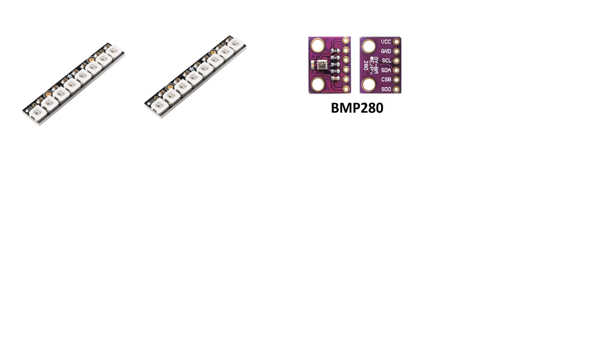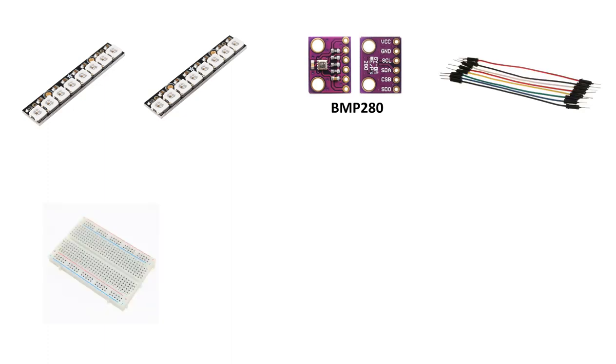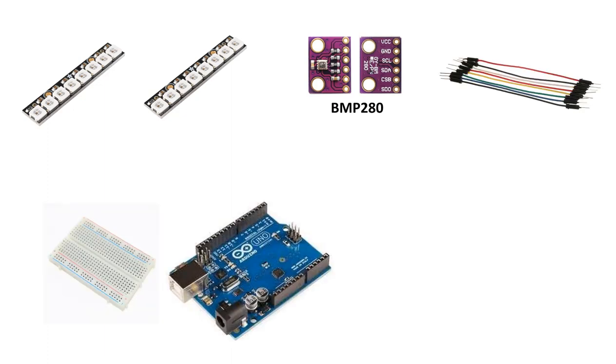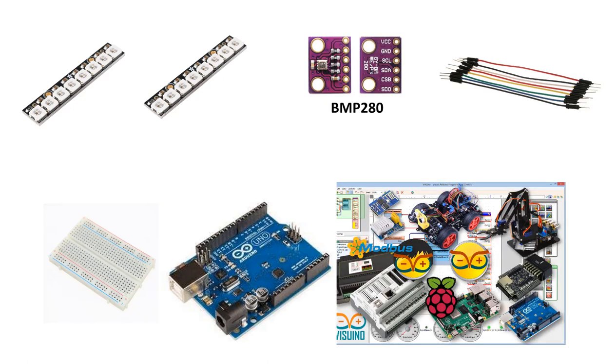For this project you will need 2 WS2812 LED strips, a BMP280 I2C sensor, jumper wires, a breadboard, an Arduino and Viswino software.